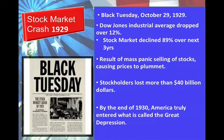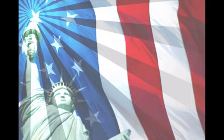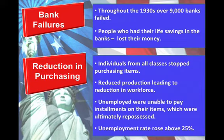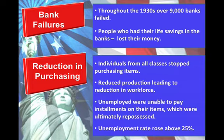Throughout the 1930s, over 9,000 banks in this country failed. People who had their life savings in the banks lost their money. This led to a reduction in purchasing — individuals from all different classes stopped buying things, which led to reduced production, which led to a reduction in the workforce. Unemployment became very high, and when people were unemployed, they were unable to pay installments for their items or homes, which were then repossessed. During the Depression, unemployment rates rose above 25%.